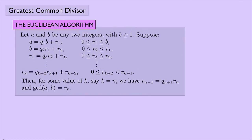This is the Euclidean algorithm. If we let A and B be any two integers with B greater than or equal to 1, and we suppose that we keep dividing using the division algorithm, ending up with a series of divisions, eventually for some value of k — say k equals n — we're going to have a remainder of 0, and the last non-zero remainder is going to be the greatest common divisor. I want to prove this, but before I prove it, I want to look at a lemma that I'm going to use in the proof of the Euclidean algorithm.